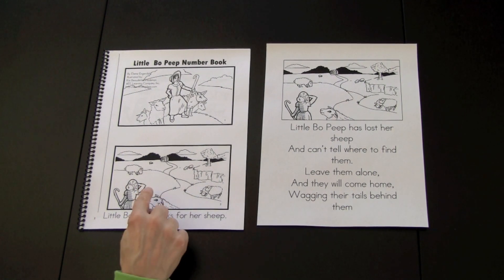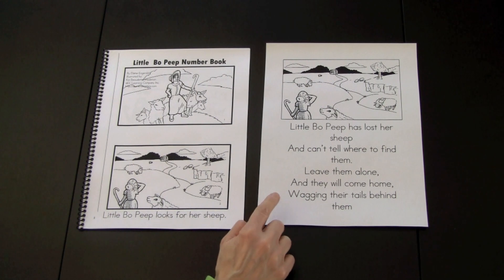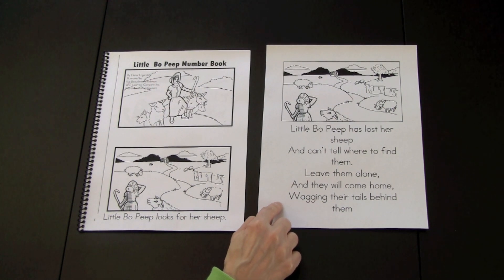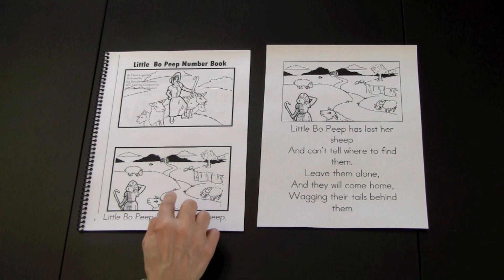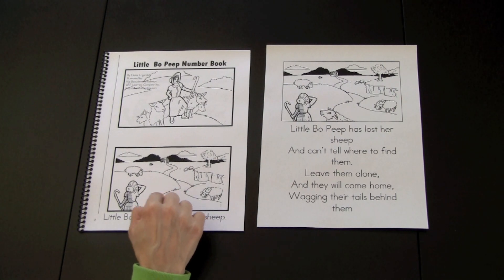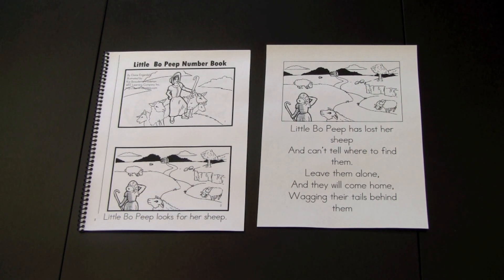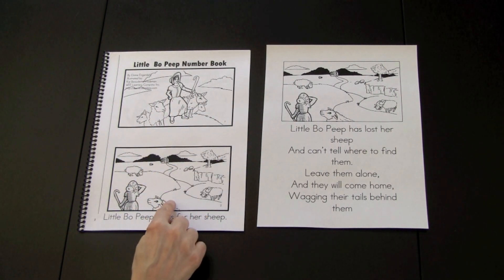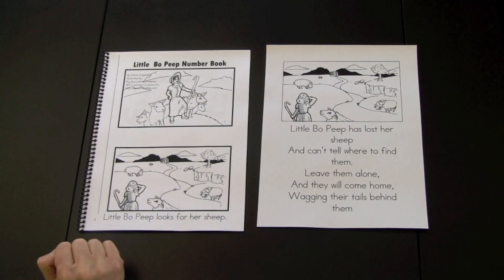Prior to using the interactive math reader, the nursery rhyme Little Bo Peep would be read with the children. Then the corresponding math book would be introduced to them. The pictures would be placed in a pocket chart along with the text or displayed on the smart board to use as a shared reading experience.